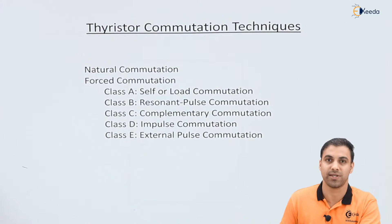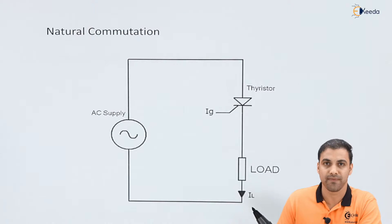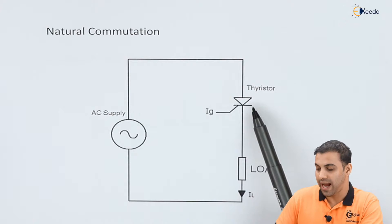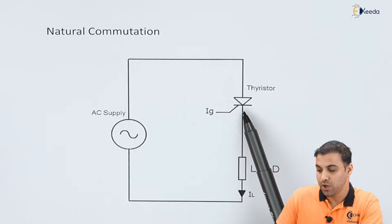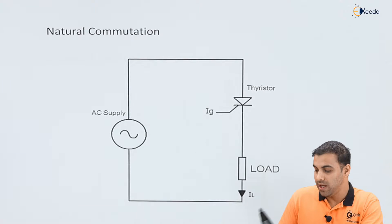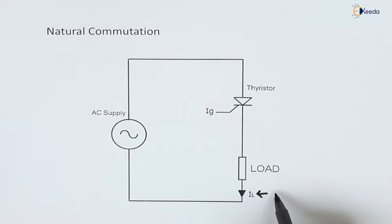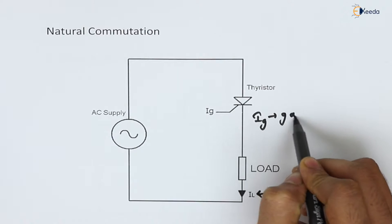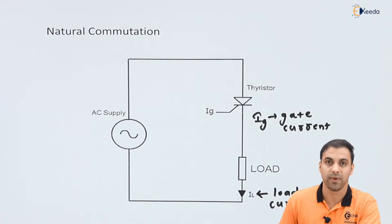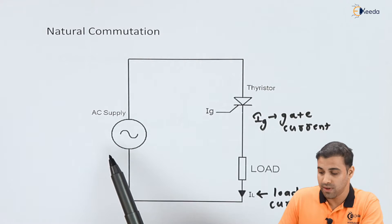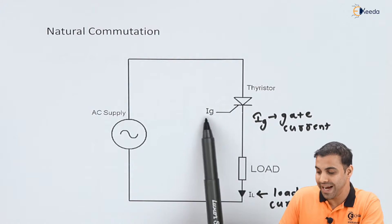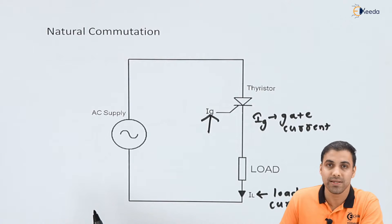Now let's talk about the natural commutation process. As you can see this diagram, I have supplied an AC voltage across a thyristor and a load resistor. Let IG be the thyristor minimum gate current required to allow the thyristor to conduct, and let IL be the load current. In natural commutation, whenever the sine wave of the AC supply is positive, the thyristor is forward biased, and once a triggering gate current is applied, the thyristor starts conducting.